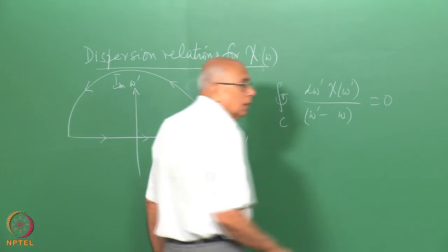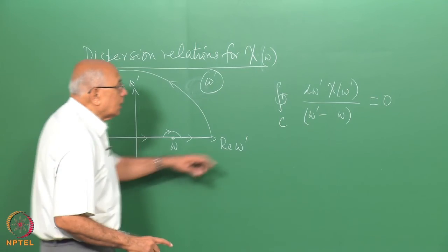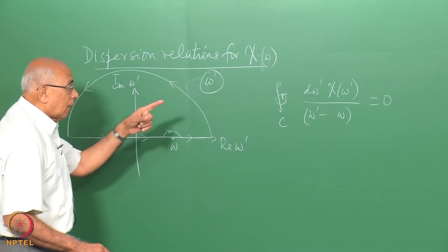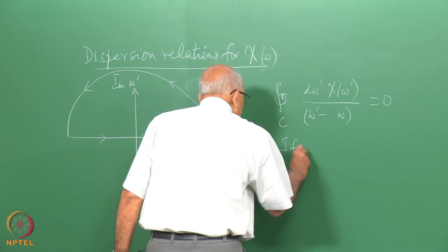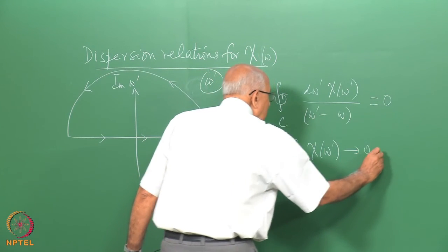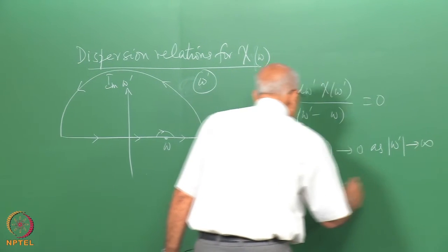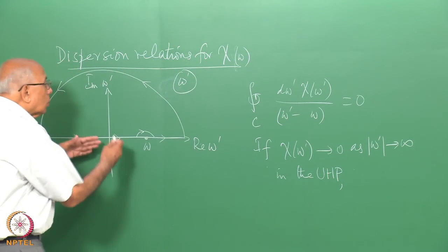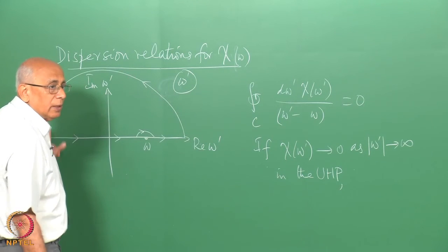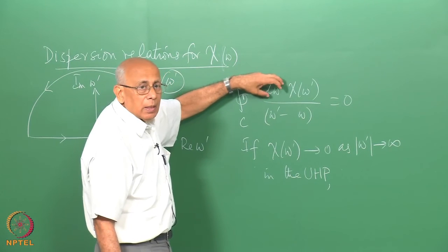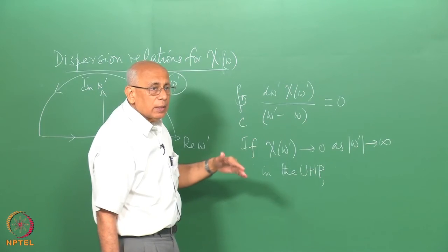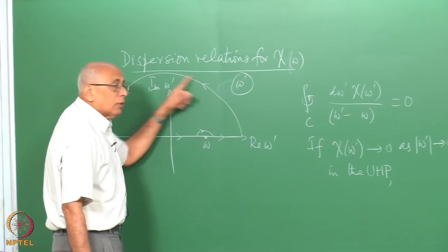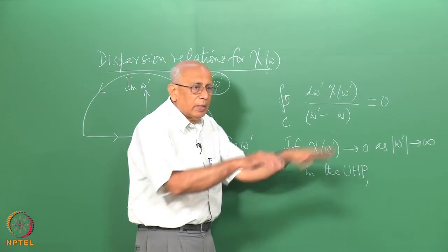This integral is equal to zero, and the condition we needed is that the integrand must vanish as omega prime goes to infinity anywhere in the upper half plane. So if chi(omega prime) goes to zero as mod omega prime tends to infinity in the upper half plane, then this contour C could be blown out all the way to infinity. This contribution would vanish, and a sufficient condition is that chi vanishes in the upper half plane — it suffices if chi vanishes along the real axis, since on the imaginary axis you have extra convergence factors.